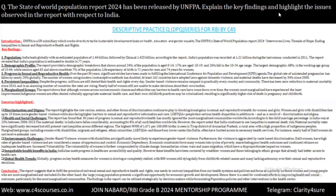On global health trends, the report says that progress on key health measures for women is slowing or completely stalled, with 800 women still dying daily from childbirth-related causes and many lacking autonomy over their sexual and reproductive decisions. These are the key findings and concerns highlighted by the report.